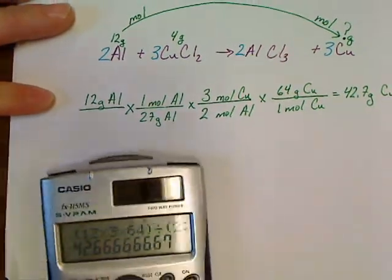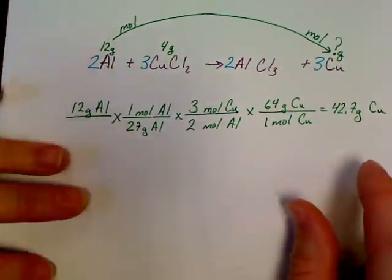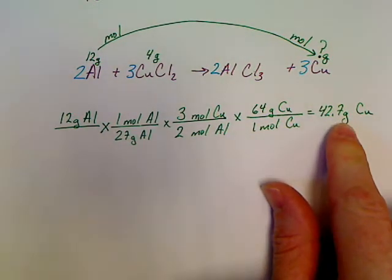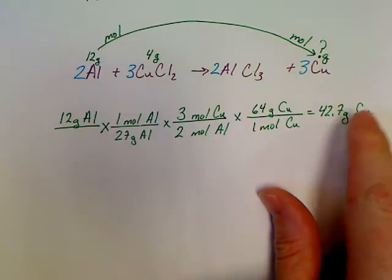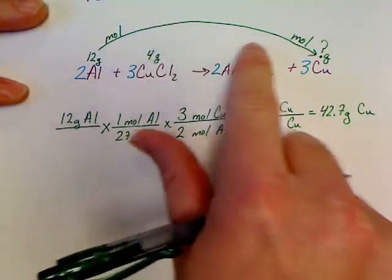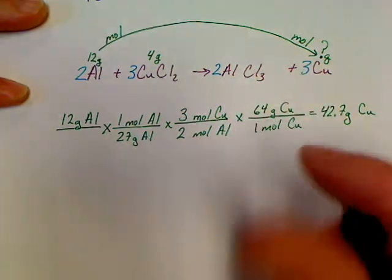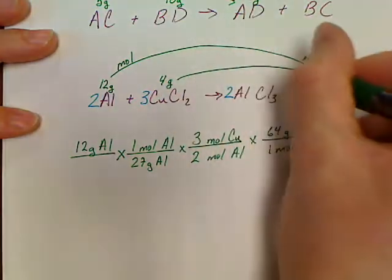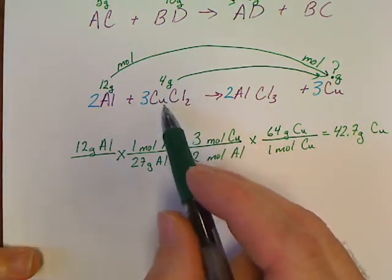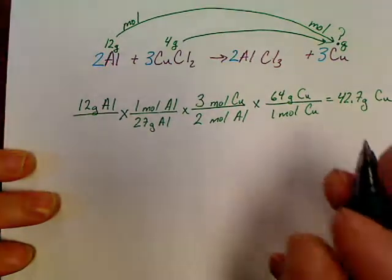Now I'm going to do one thing different. I'm not putting a box around that yet. I don't know if that's an answer. Because here's the catch. I've still got to do one more thing. This was the 12 grams conversion. Now I want to do the exact same thing starting with the 4 grams. I want to do it with the cupric chloride.